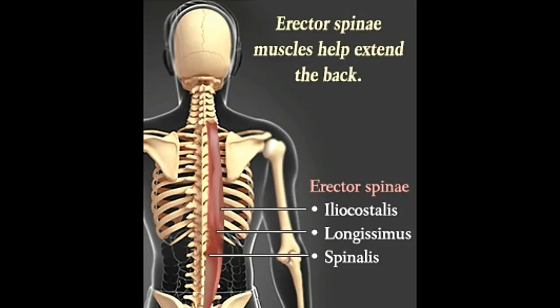These muscles help us to straighten our back. The presence of a large number of type 1 muscle fibers — slow-twitch red muscle fibers that are rich in myoglobin and carry more oxygen — in the erector spinae muscle group makes it resistant to fatigue.